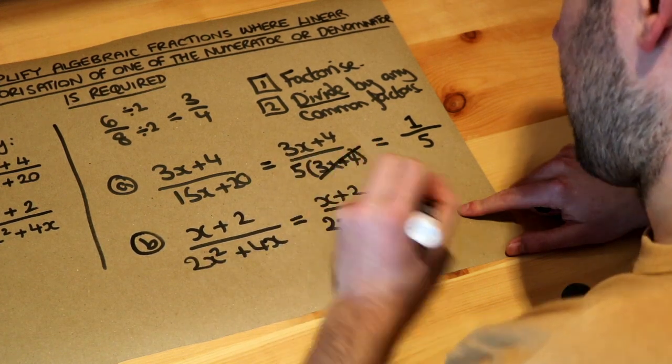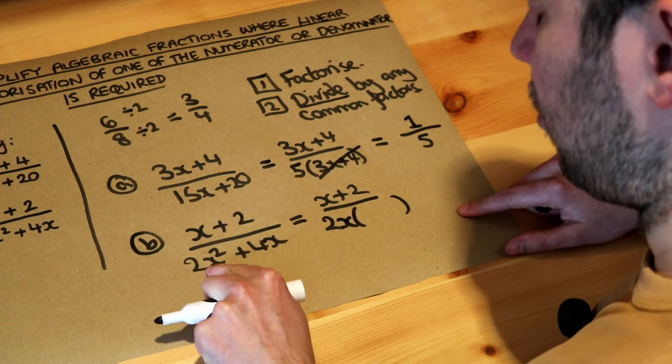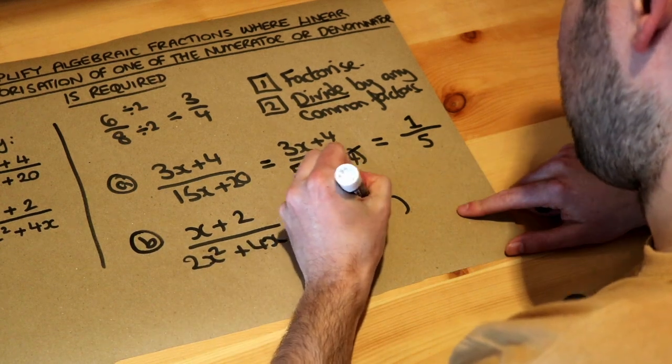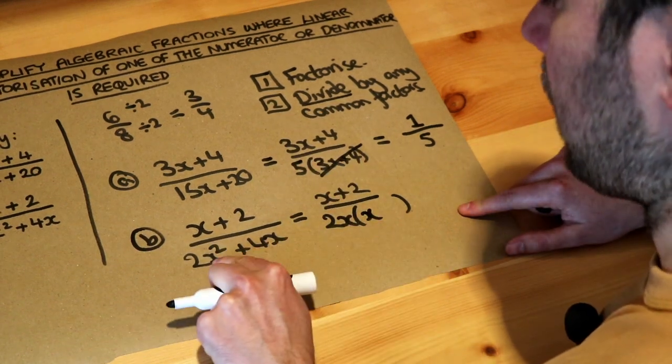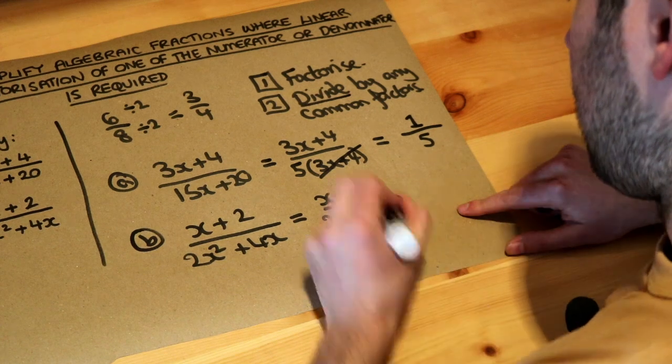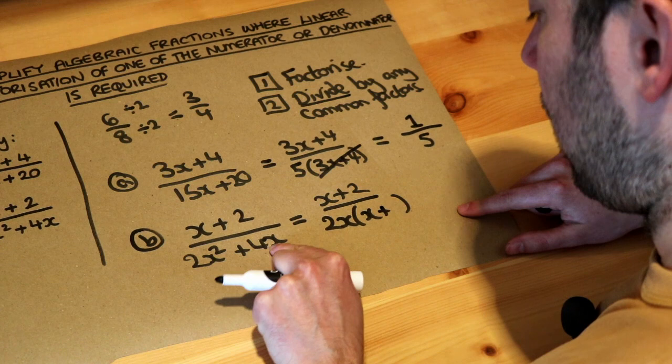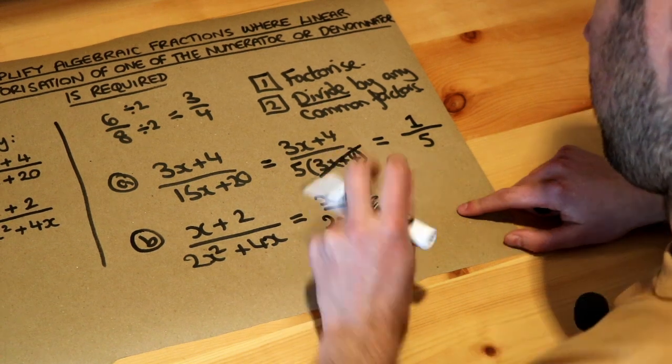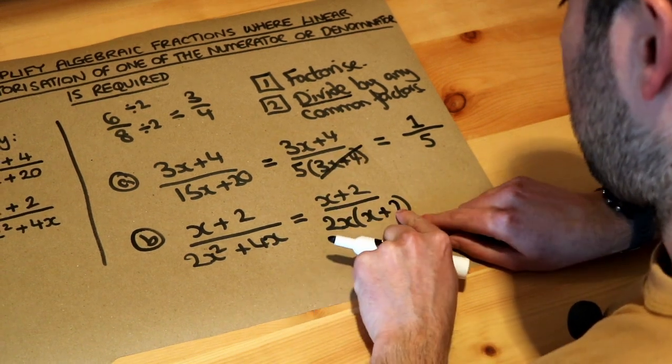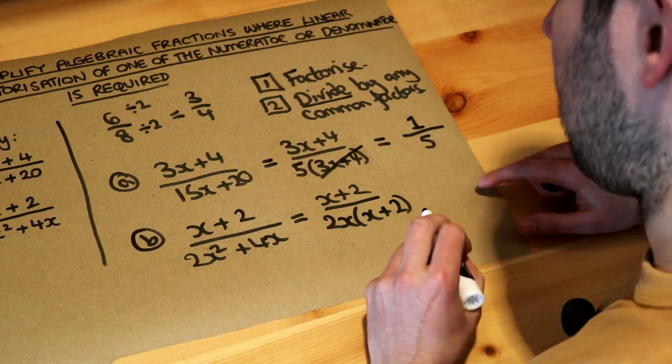And then we have a bracket. 2x times what is 2x squared? Well, we need an additional x because x times x will give you x squared. And then you've also got that 2. And then 2x times what is 4x? Well, we've already got the x there, so we just need to times by 2. Because then 2 times 2 is 4, and with the x we'll get the 4x.